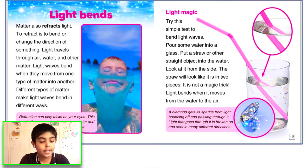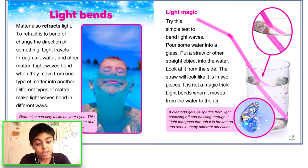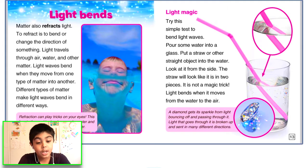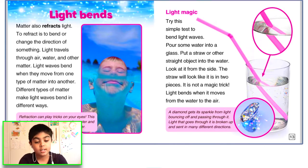Try this — a simple test to bend light waves. Pour some water into a glass. Put a straw or other straight object into the water. Look at it from the side. The straw will look like it is in two pieces. It is not a magic trick — light bends when it moves.